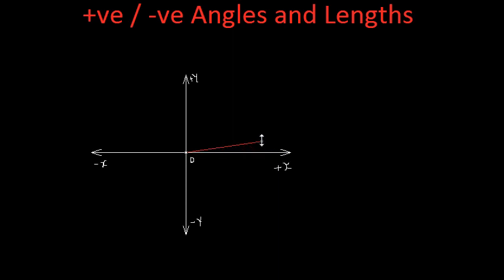But if I change the direction, this angle is measured from the positive x in the anticlockwise direction and this will be referred as positive angle or we will call it plus theta. So if the angle is measured anticlockwise, it is referred as positive angle.